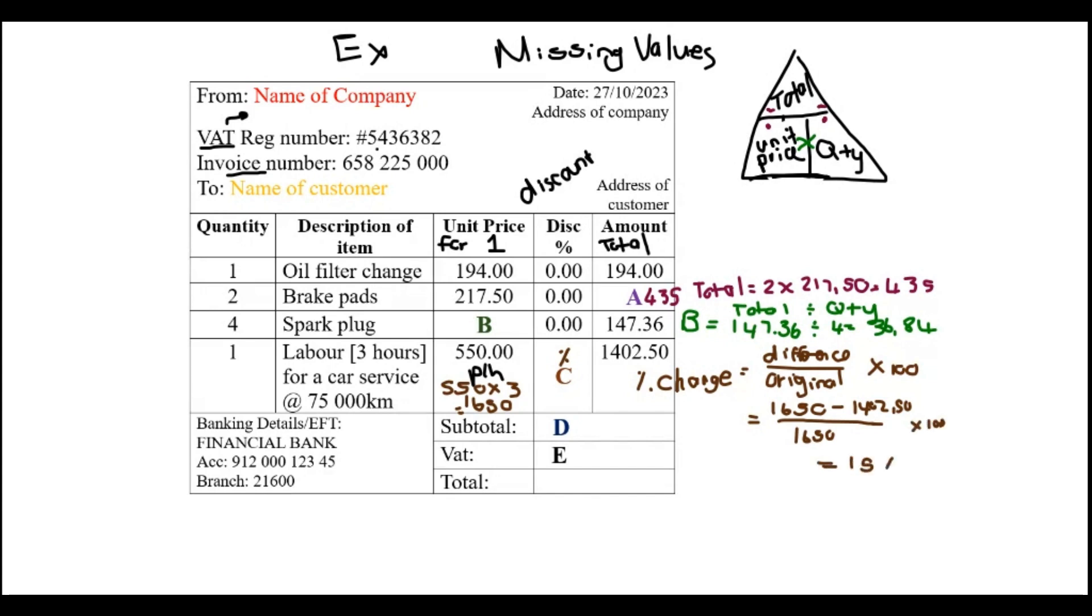Now the subtotal - in this case the subtotal I just add everything, I just add all the total amounts. It would be the one ninety four, the A, the one forty seven, the one thousand four hundred. Put them in your calculator, add them, and you get something like two one seven eight point eight six.